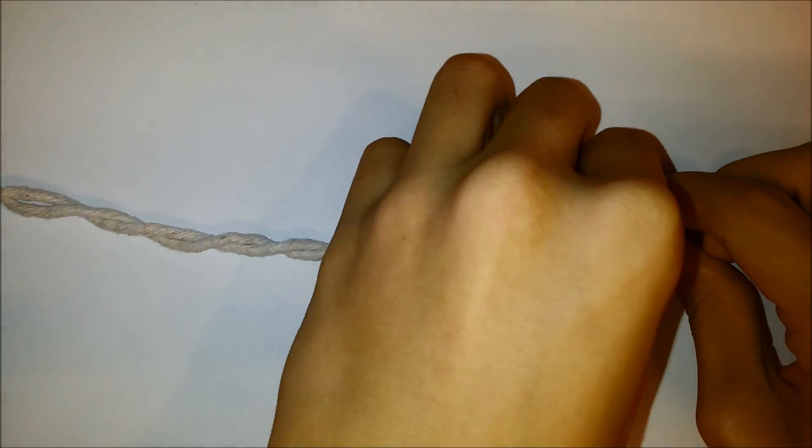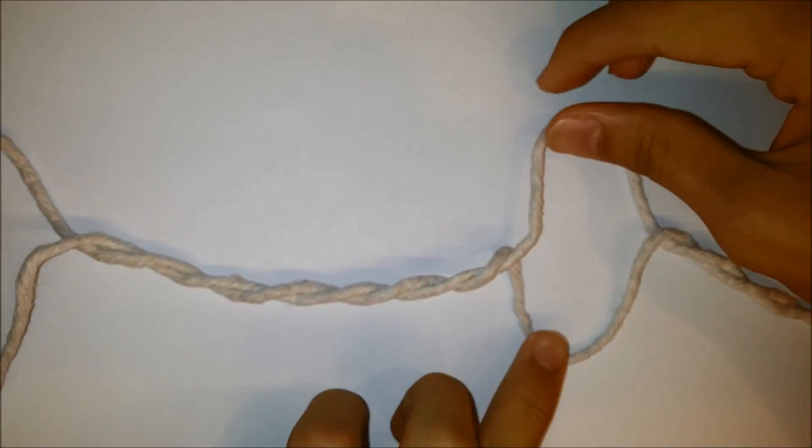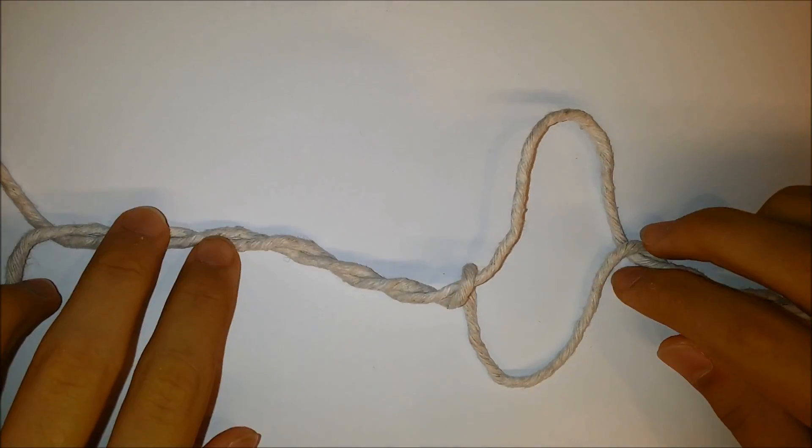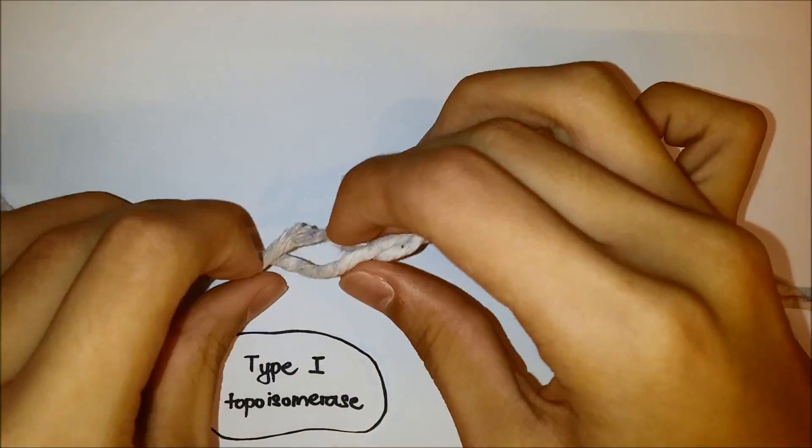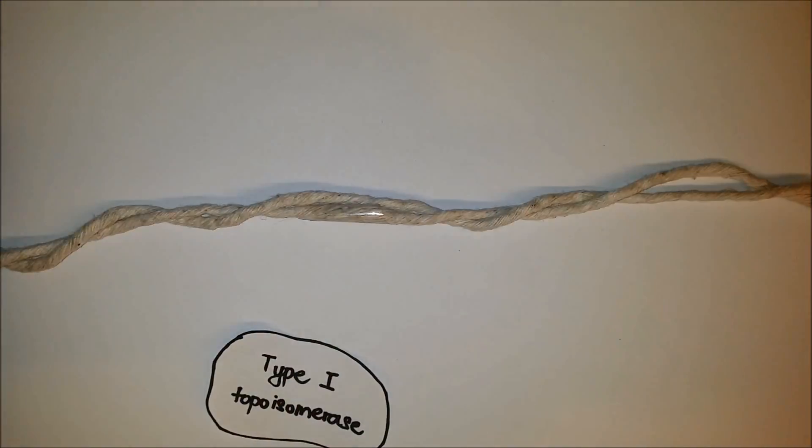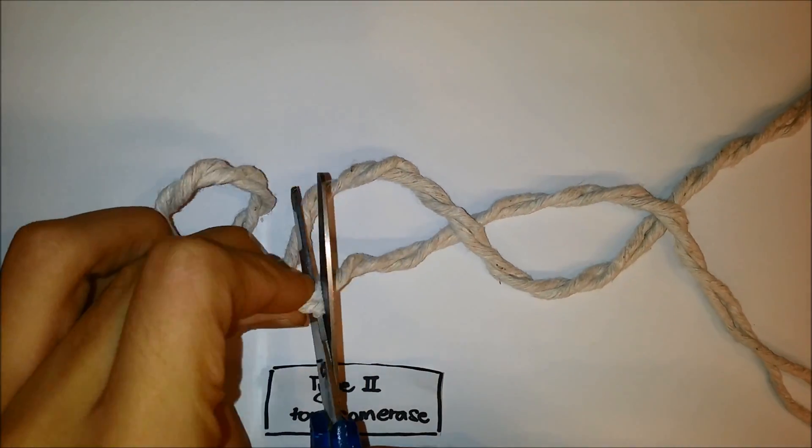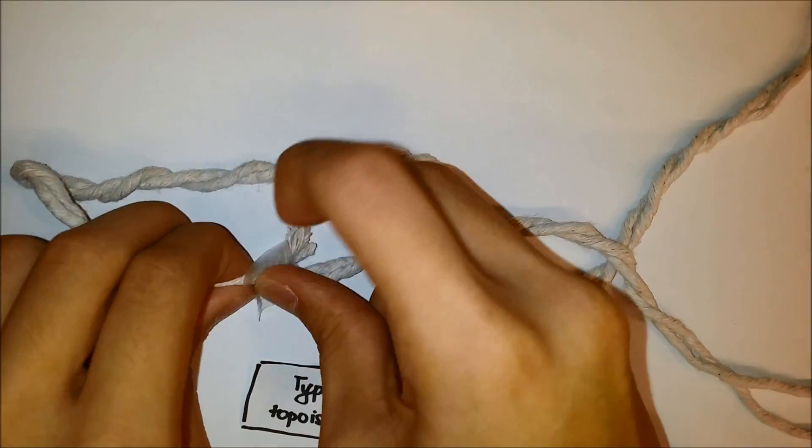As the replication process continues, the parent helix becomes tightly coiled downstream due to the tension created from the advancing replication fork. For example, type 1 DNA topoisomerase breaks only one polynucleotide backbone, whereas type 2 DNA topoisomerase breaks both polynucleotide backbones. This is known as DNA gyrase in E. coli.